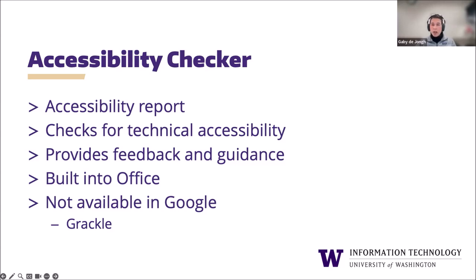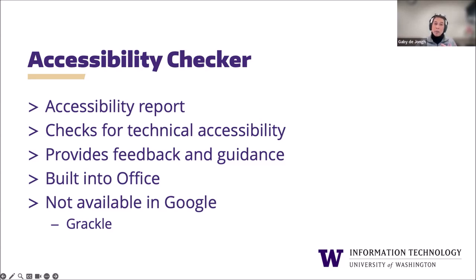Google does not provide a built-in accessibility checker, but there is a third-party plug-in called Grackle that helps fill that gap. Unfortunately, at this time, Grackle products cannot be included in the UW instance of Google Workspace due to some security concerns. We checked it out a while ago and it was determined their security was somewhat immature. But they've made significant improvements, so we're going to go back and review that — Grackle Docs may be available in the future, so stay tuned.